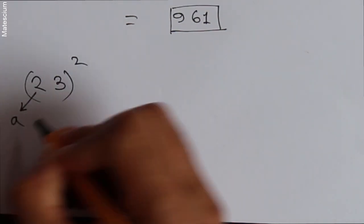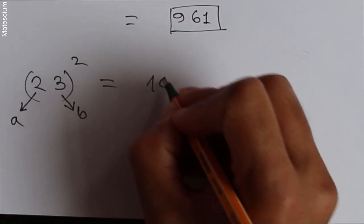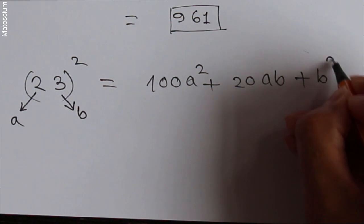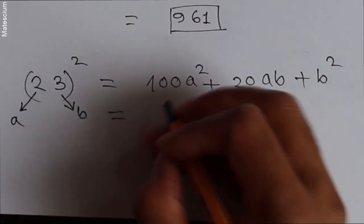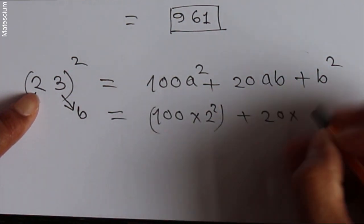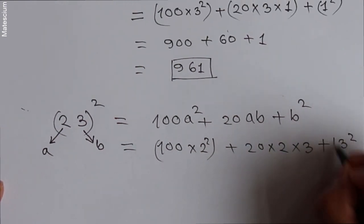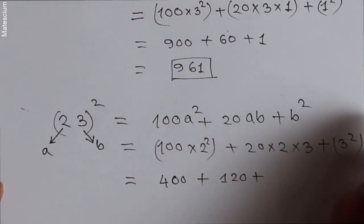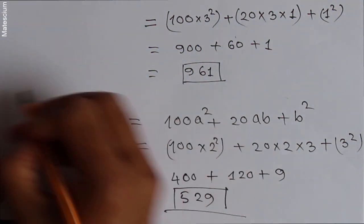You have to consider the first digit as A and the second digit as B, and use this formula: 100A² + 20AB + B². Write A as 2 and B as 3. So 100 times 2 squared, plus 20 times 2 times 3, plus 3 squared gives us 400 plus 120 plus 9, and the total is 529. Yes, this is the square value of 23.